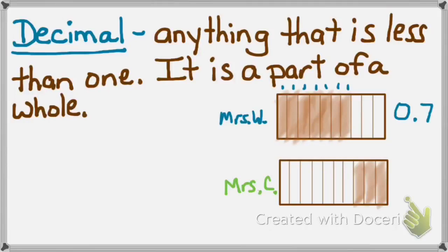Does Mrs. Castellano have any whole chocolate bars? No, she has zero whole chocolate bars and how many tenths? One, two, three — she has zero and three tenths. So a decimal is a number that's less than a whole.